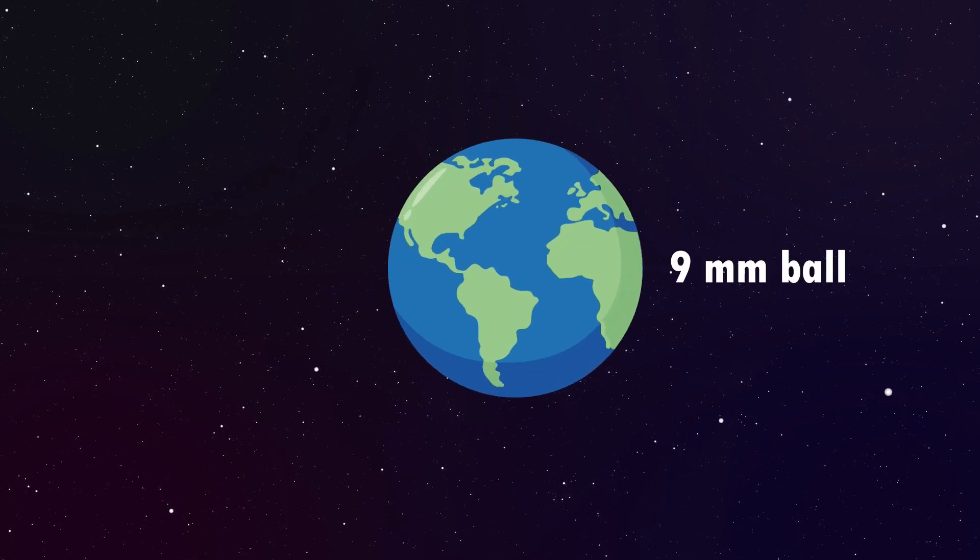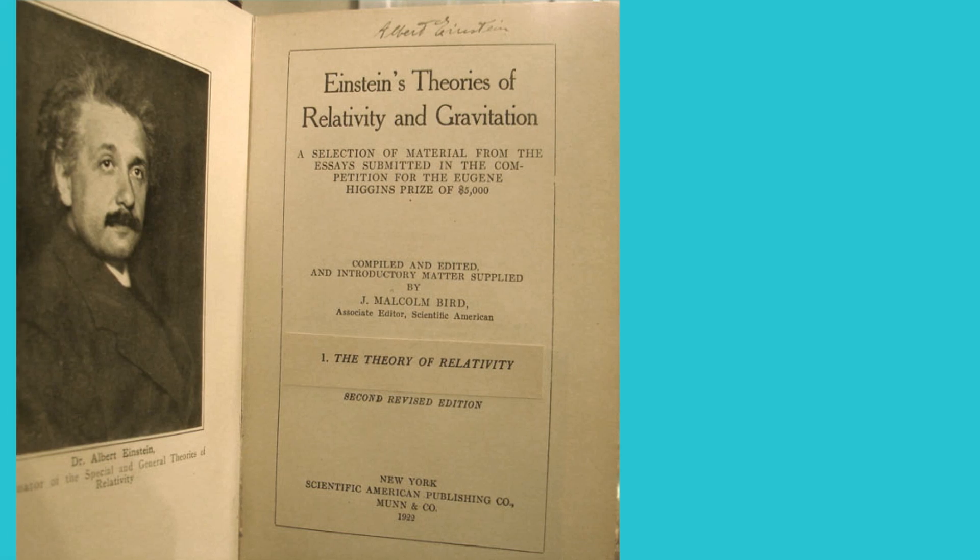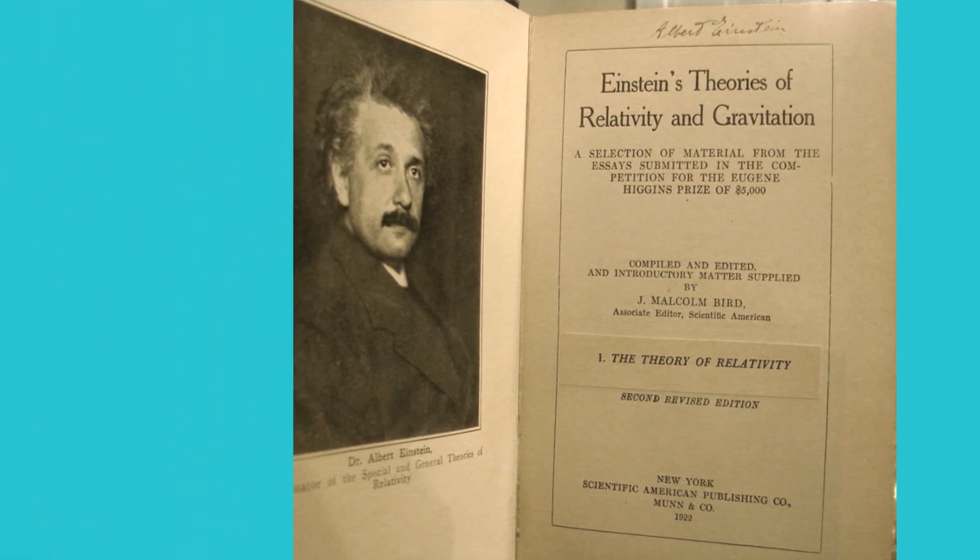While this is all nice, we have to be a bit careful using Newtonian mechanics for understanding black holes. In order to understand black holes completely, we need Einstein's theory of general relativity. In fact, according to Einstein, nothing can move faster than light. Therefore, it is not only light, but nothing can escape out of black holes.